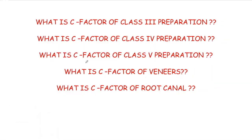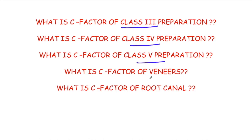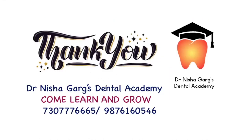So the C factor for class 1 is 5, for class 2 (MO or DO) is 2, and for MOD is 1. In the next video, we'll be calculating the C factor for class 3, class 4, class 5 restorations, veneers, and root canal. Thanks for watching. Stay tuned, take care, and goodbye.